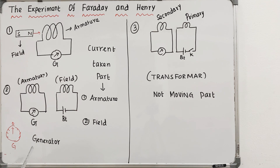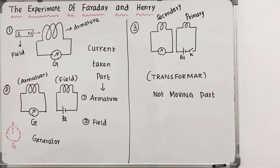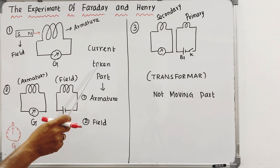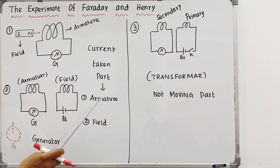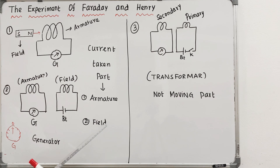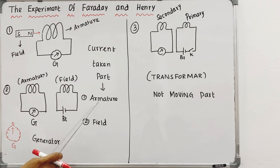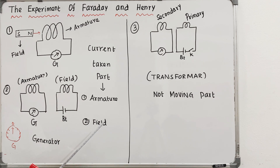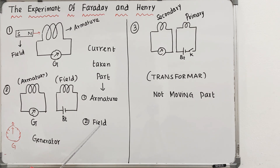This is the generator principle. What is armature field? The current is in the armature. The magnetic field is produced by the field winding. There are two main parts.